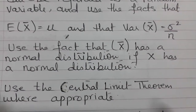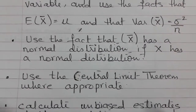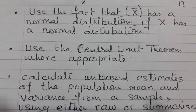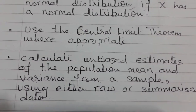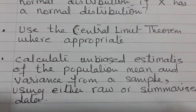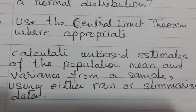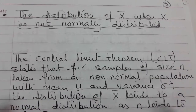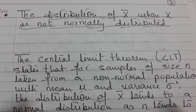In this video I will explain what the Central Limit Theorem is, take an example from a past paper question, and show how to calculate the unbiased estimate of the population mean and variance. Let's start with the concept of the Central Limit Theorem.